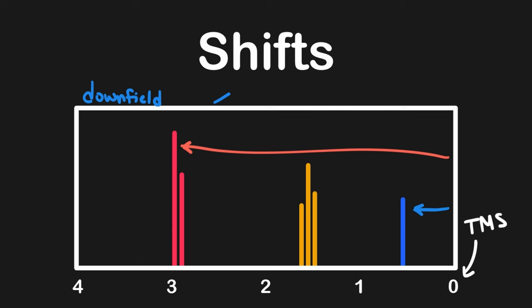Generally, the closer the hydrogen atom is to an electronegative atom or unsaturated group, the greater the degree of shifting. The red signal would be coming from a hydrogen close to one of these features. If these groups are absent, as with an alkane, electron shielding occurs and the signal will appear further upfield, or to the right, in the NMR spectrum. Downfield shifts move signals to the left and are due to deshielding. The D in both downfield and deshielding can help you remember that these two go together.